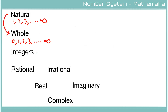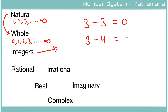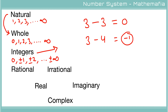Let's talk about integers. We have three chocolates and three kids, so chocolates left are zero. But if we have three chocolates and four kids, we are short of one chocolate — that means minus one. Minus one is not part of any previous list, so we need another list called integers: zero, plus one and minus one, plus two and minus two, and so on up to plus and minus infinity. Every whole number is also an integer.